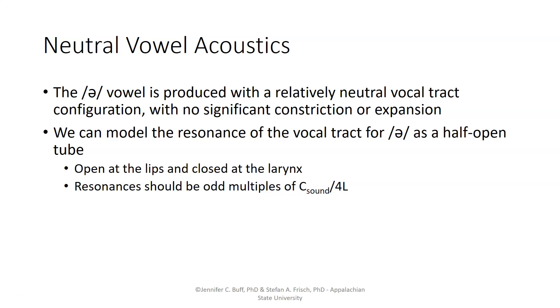The neutral schwa vowel is produced with a vocal tract that doesn't have any constriction or expansion in a significant way. So we can treat it as a half-open resonating tube, open at the lips and closed at the larynx.